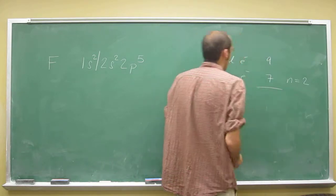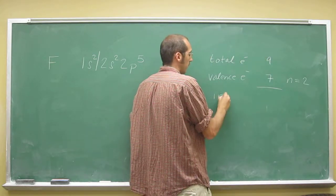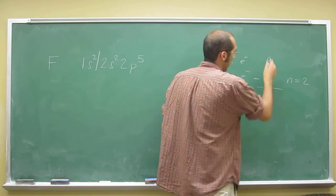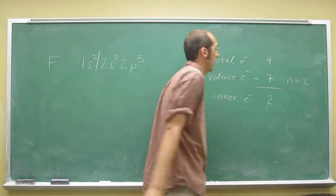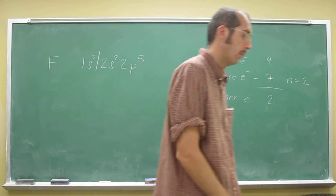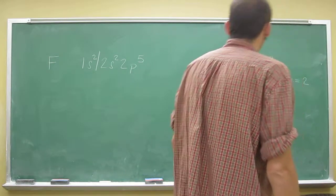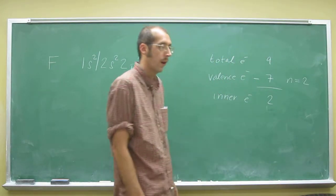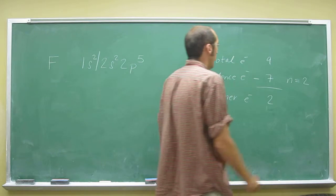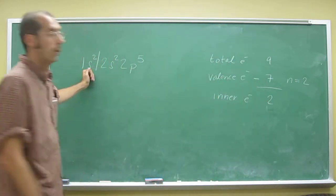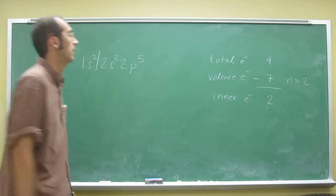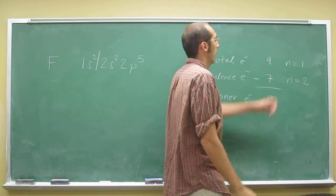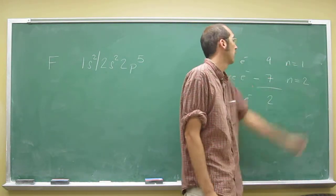There's also something called inner electrons, and you can figure those out by subtracting. So there are 2 inner electrons. Where are those other electrons? They're in the 1s orbital, or the n=1 energy level.